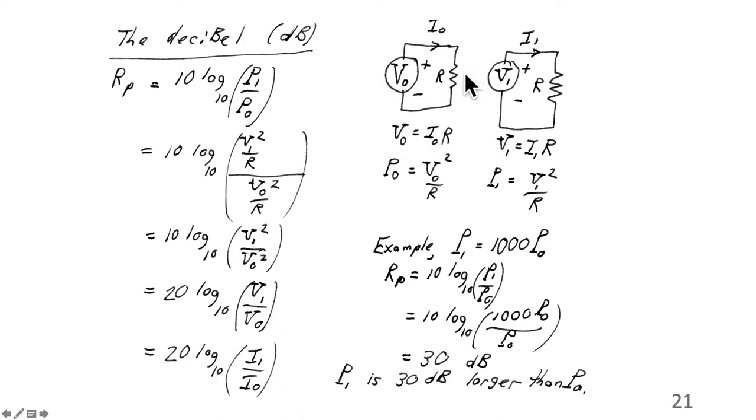The DC power dissipated in R would be V0 squared divided by R. It would also be I0 squared R, but I'm just using the V0. Similarly, P1 is V1 squared divided by R. If we replace P1 by V1 squared over R and P0 by V0 squared over R, the R's cancel, we're left with V1 over V0 squared. But that squared can be brought outside, brought down in front of the log. And you can get 20 log base 10 V1 over V0.